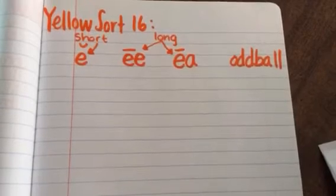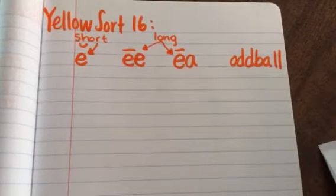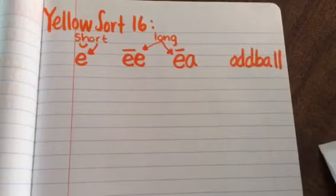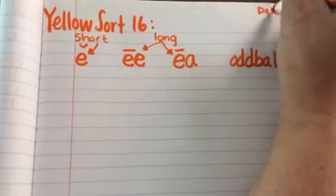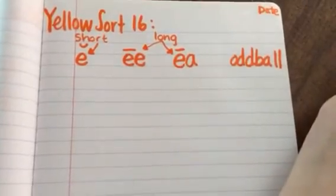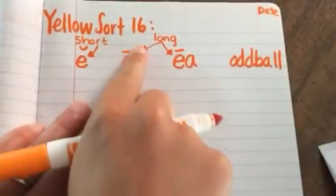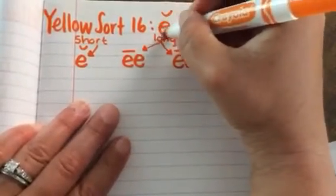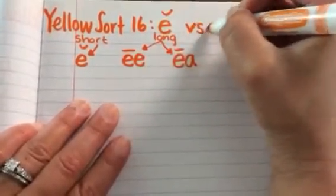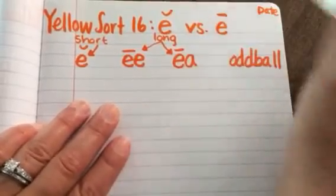When you're done, go ahead and grab your word study notebook and open up to the next clean page. Put today's date in the top right hand corner and write the title: yellow sort 16 colon, short E versus the long E.